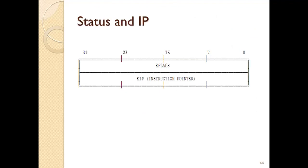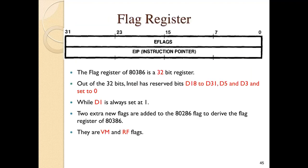The instruction pointer and flags are 32-bit. The flag register of the 386 is a 32-bit register. Out of the 32 bits, Intel has reserved D1 and D31, D5 and D3, and set them to zero, while D1 is always set to one. Two extra new flags were added to the 386 and 286: the virtual mode flag and the RF flag.